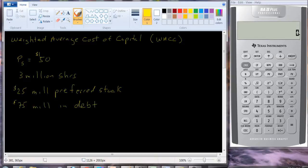Let's also assume that the firm has $25 million in preferred stock and $75 million in debt. So these numbers have already been calculated. They could be looked up on the balance sheet of a firm.